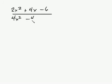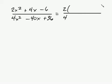And let's do this one here. How about 2x squared plus 4x minus 6, and this is all going to be over 4x squared minus 40x plus 36. On the top, I'm going to factor out a 2. And on the bottom, I'm going to factor out a 4. I'm going to set up my parentheses here and here. And this is going to be x squared plus 2x minus 3. And bottom's going to be x squared minus 10x plus 9.